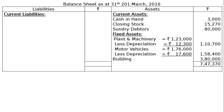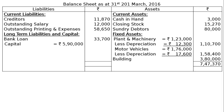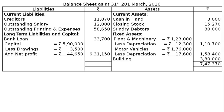On the liabilities side — current liabilities: creditors rupees 11,870; outstanding salaries rupees 12,000; outstanding printing and stationery expenses rupees 58,650. Long-term liabilities: bank loan rupees 33,700. Capital rupees 5,90,000 less drawings rupees 3,500 plus net profit rupees 44,650, giving rupees 6,31,150 in the final column. Total liabilities: rupees 7,47,370. This is the final answer.